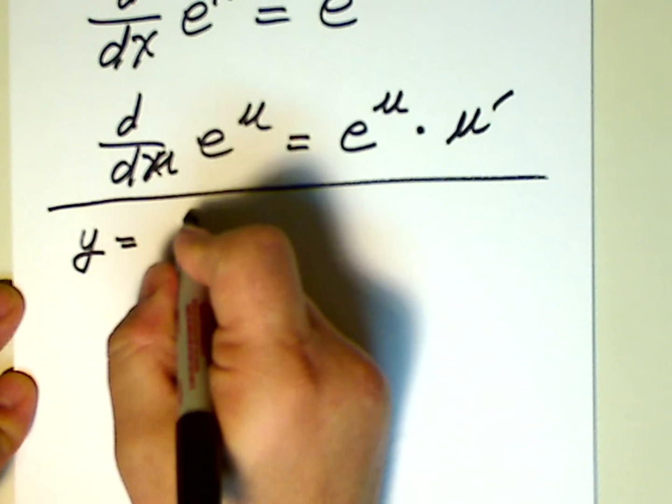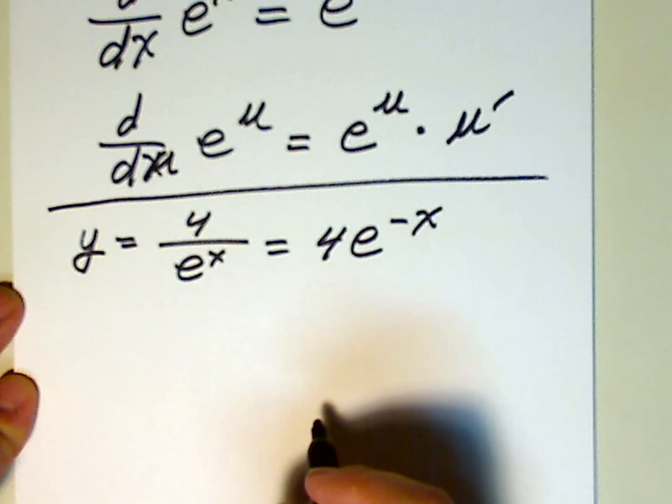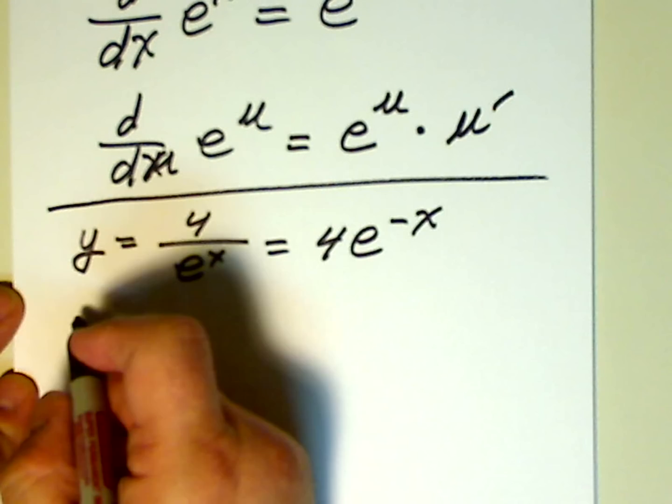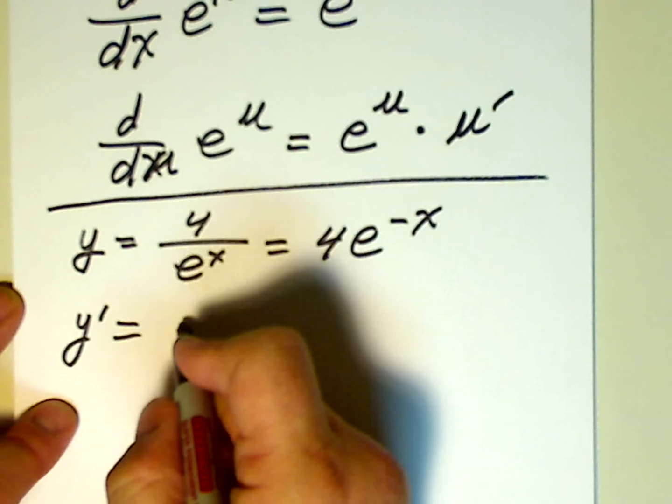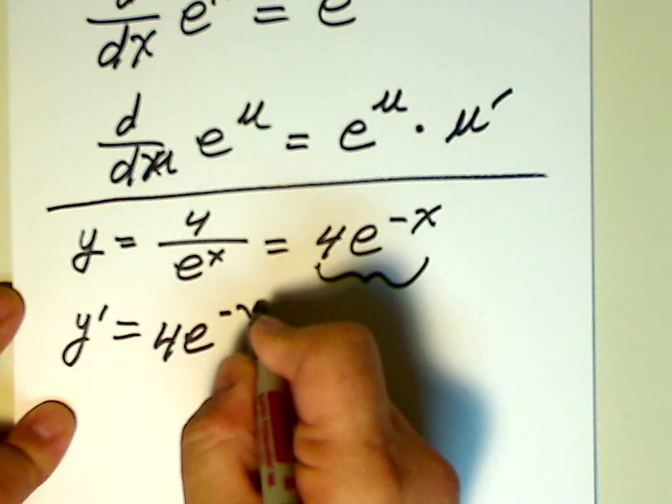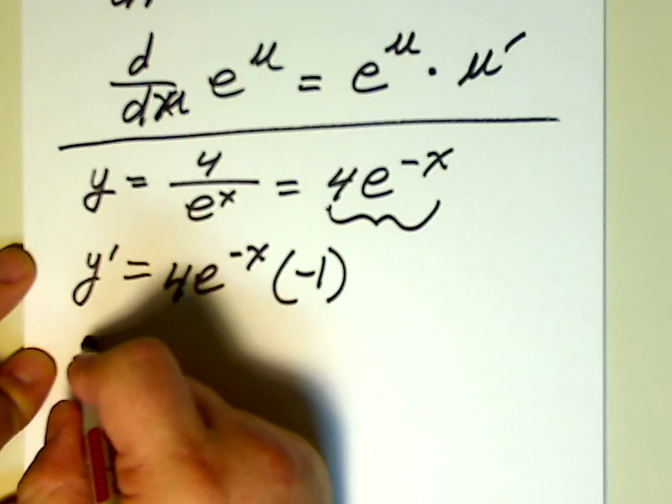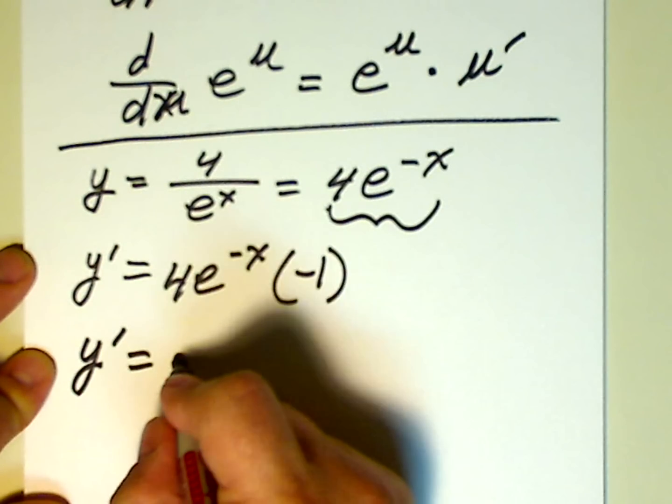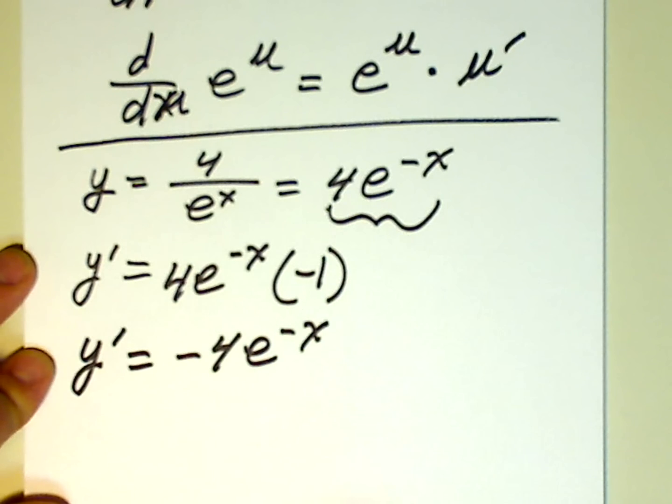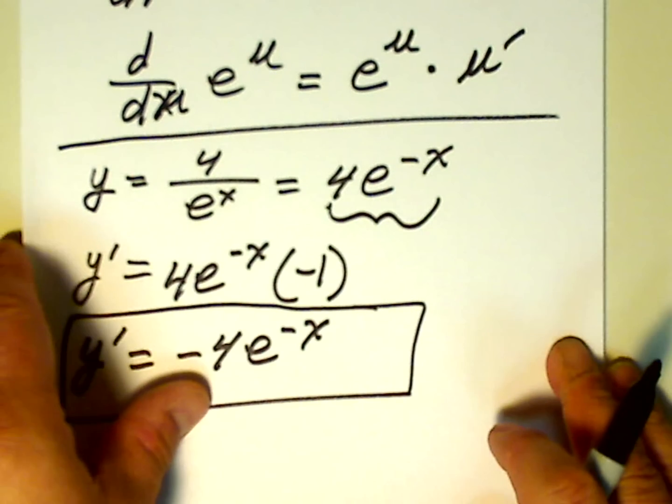So let me show you what I'm talking about here in this problem. Y equals 4 over e to the x, and that's equal to 4e to the negative x. So now we're going to take, well, let's just do it formally. Y prime is equal to, let's rewrite this, 4e to the negative x times negative 1, the derivative of negative x. And therefore, y prime is equal to negative 4e to the negative x. There's our derivative.